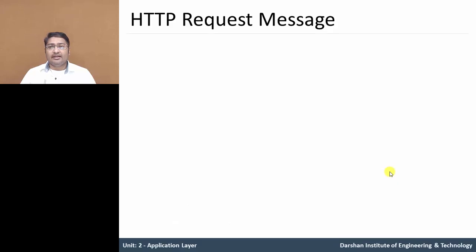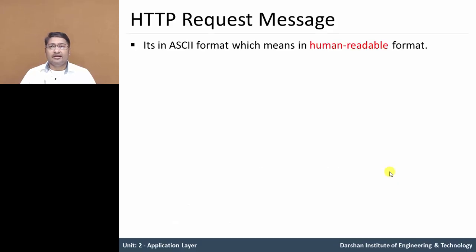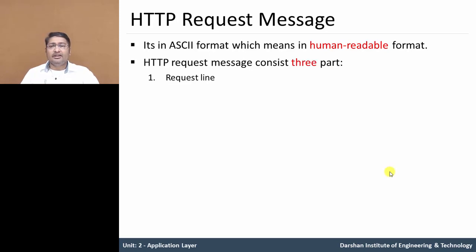The first one is HTTP request message. In HTTP request message, it is readable by any human being. So it is in the format of ASCII format, so every human being can read that message. HTTP request message consists of three parts: first one is request line, second is header line, and third is carriage return.